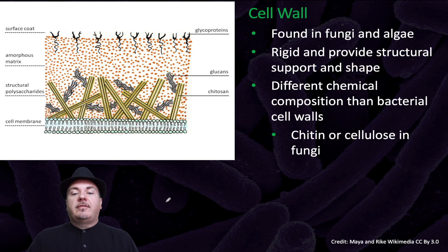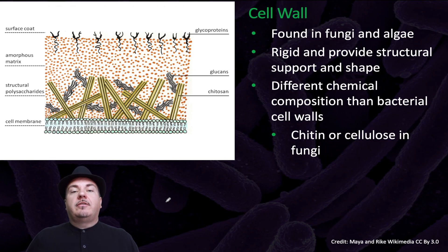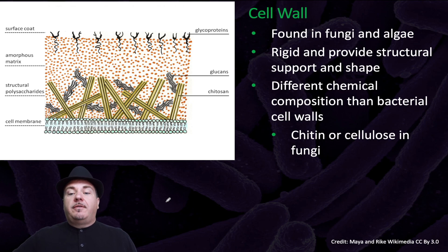Some eukaryotic cells have a cell wall. They're found in fungi and algae. They're rigid and provide structural support and shape. They're made out of a different chemical composition than bacterial cells — for example, chitin or cellulose in the fungi.